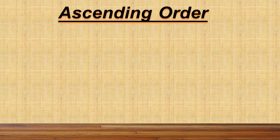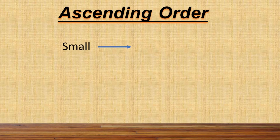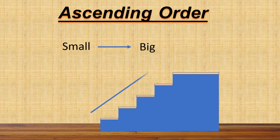Now let's learn ascending order. What do you mean by ascending order? When we arrange the numbers from smallest to greatest, we will say they are in ascending order. That means small to big. Or, if we move from downstairs to upstairs, we will call it as ascending order. Kids, always remember that in ascending order, the number always keeps on increasing.